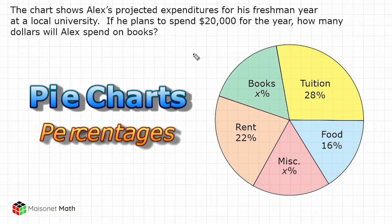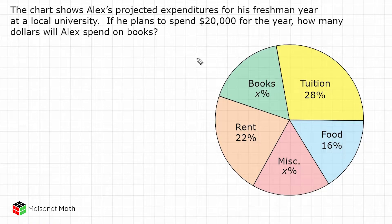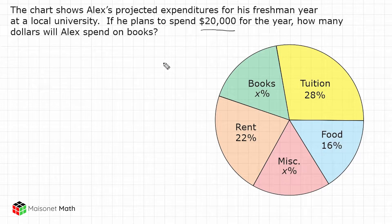The chart right here shows Alex's projected expenditures for his freshman year at a local university. The problem says he plans to spend $20,000 for the year, and we have to determine how many dollars Alex will spend on books.